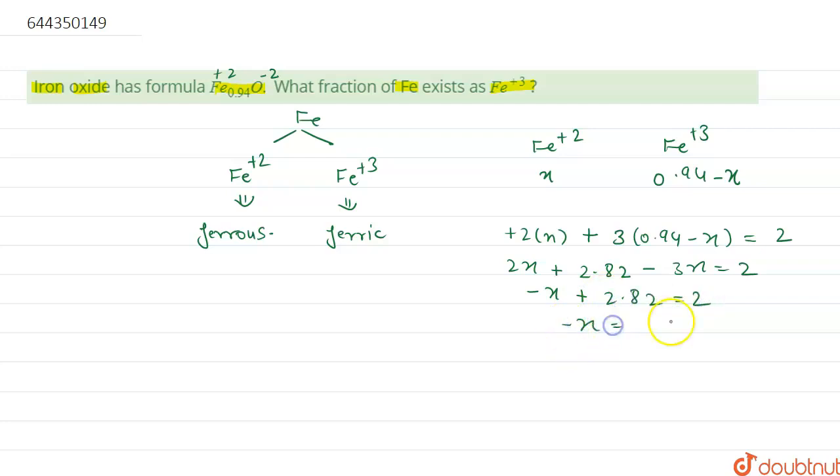So minus x becomes 2 minus 2.82, so minus x will be minus 0.82. So minus and minus are cancelled out with each other, so x will be 0.82.